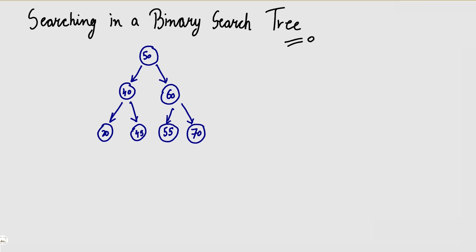Now in this binary search tree, let us say I have to search a key — let's say 55. I will search it here. Many people have the question: why is a binary search tree created? I will tell you this application — why do you want to make a binary search tree? What happens is that searching becomes very fast.